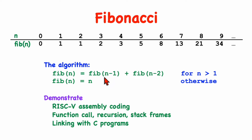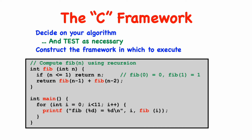This example will allow us to demonstrate a number of things, like function call and return, as well as recursion and stack frames and some other stuff. We're also going to create a function called main, which is a C program that we'll call our Fibonacci function — this will allow us to demonstrate how C code is linked with assembly code, and also just to test our function to make sure it works. Before we start coding, we need to know exactly what we're doing — what our algorithm is, and how that algorithm fits into some larger program.